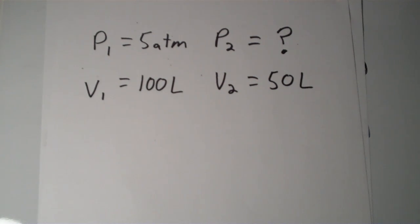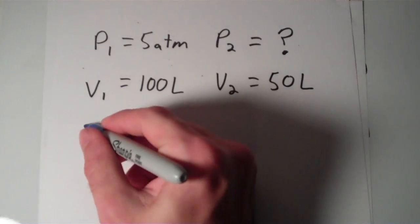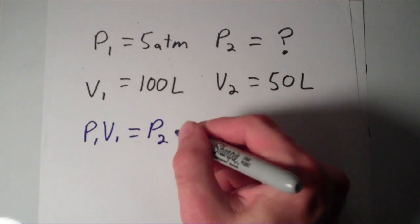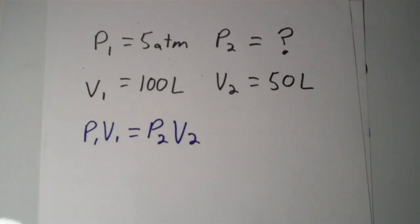Well, all you have to do is just use your two-point form of the equation. You can say P₁V₁ equals P₂V₂, which is just equal to some constant.